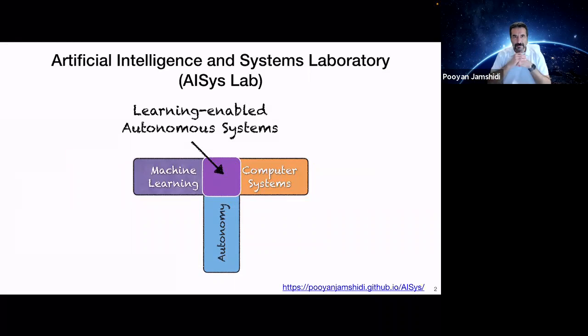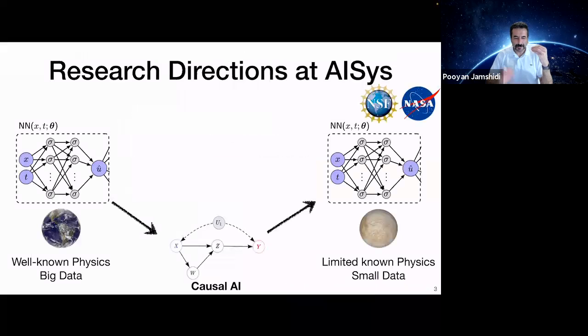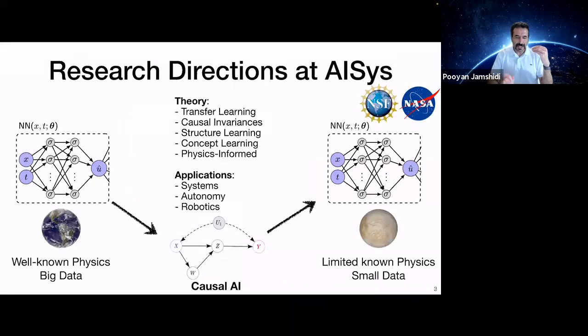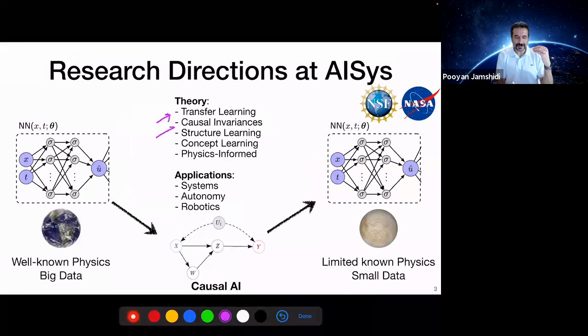I am a director for AI CISMAP where we look at many different exciting topics at the intersection of machine learning, systems, and autonomy. More specifically, we look into transfer learning, causal structural learning, concept learning, and physics-informed deep learning. Our research projects are funded by NSF and NASA.